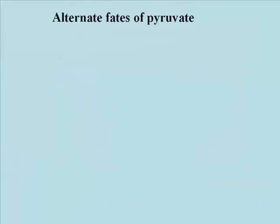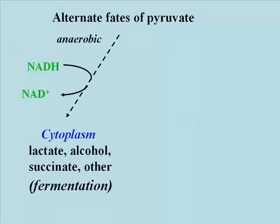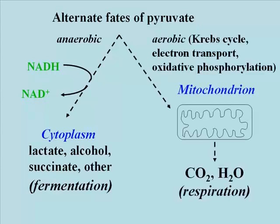There are two alternative fates for pyruvic acid. In anaerobes, or in cells under anaerobic conditions, pyruvate can be reduced to generate one of several fermentation end products — two well-known ones being ethanol and lactic acid. At the end of a fermentation there will have been several redox reactions, but in fact no net oxidation of carbohydrate. On the other hand, in aerobic organisms or cells under aerobic conditions, pyruvate will be completely oxidized to carbon dioxide and water by respiration in mitochondria.